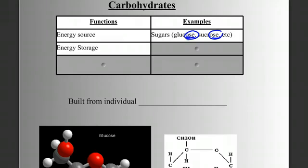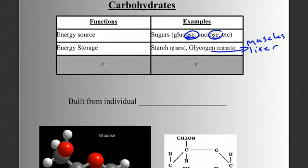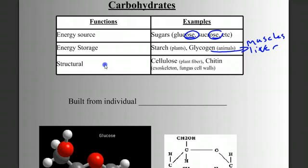Other functions of carbohydrates are as energy storage. Plants store their energy in a form of carbohydrate called starch, and animals will store energy short-term in a carbohydrate called glycogen, which we find a lot stored in muscles and in the liver. Carbohydrates can also be used as a structural material. For example, cellulose is the primary component of the plant cell walls, it's plant fiber. And chitin is a carbohydrate that's found in the exoskeleton of arthropods, also in the cell walls of fungal cells.